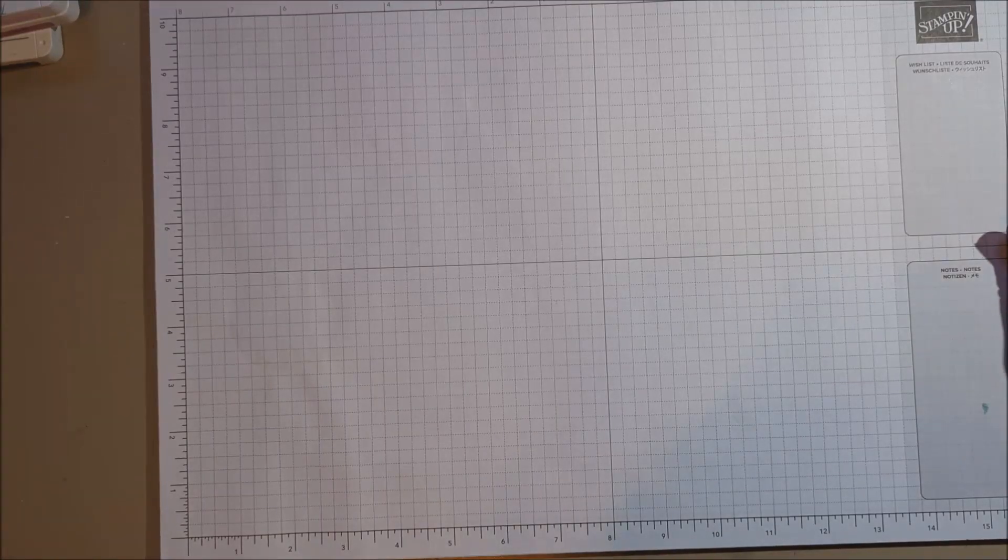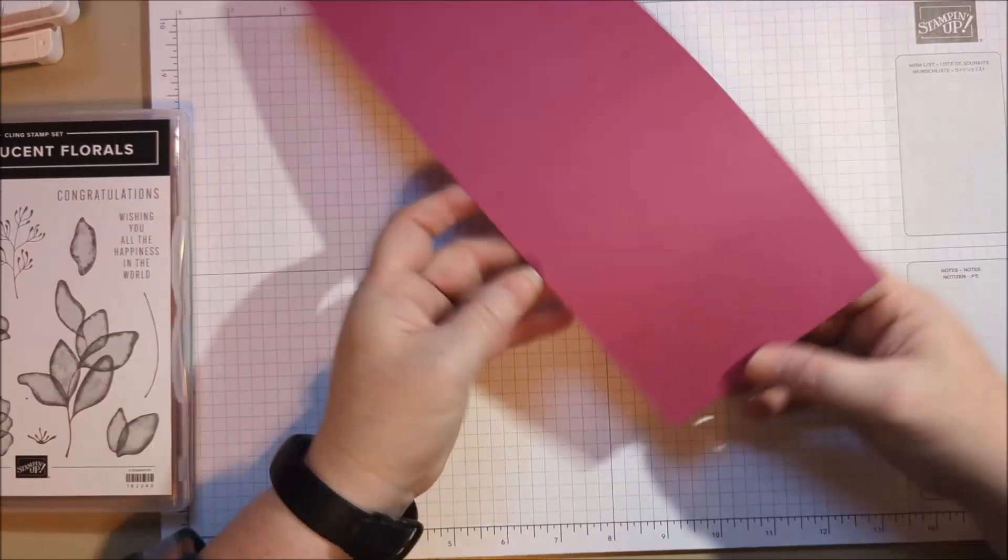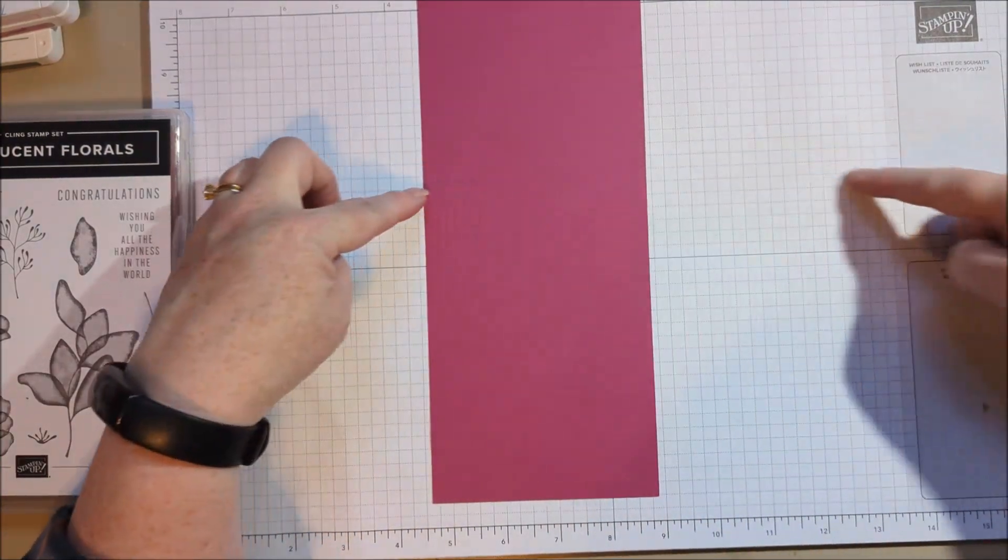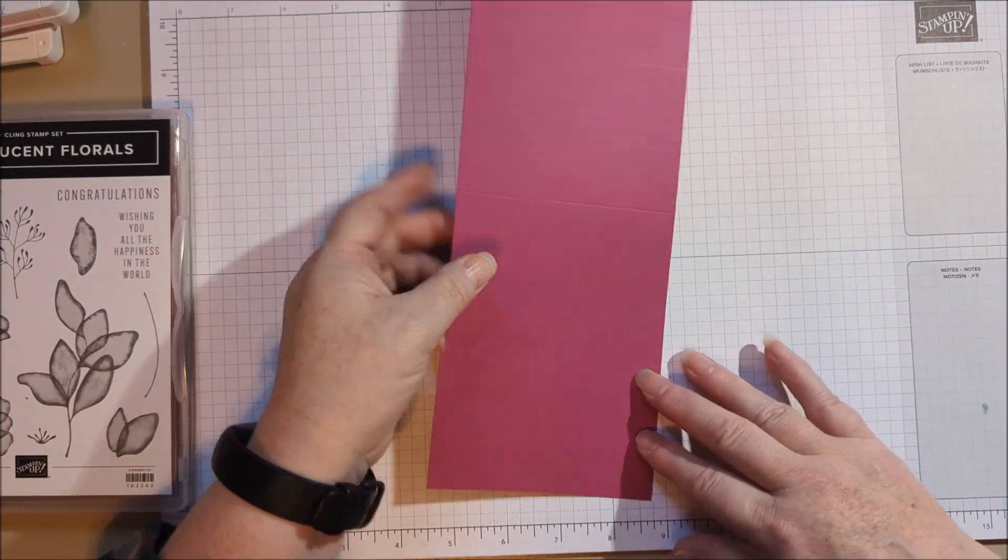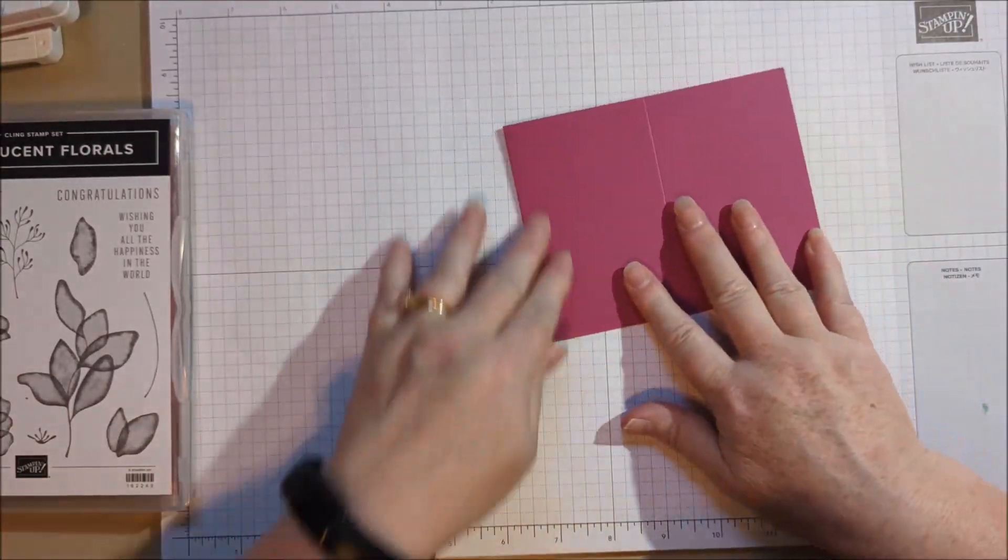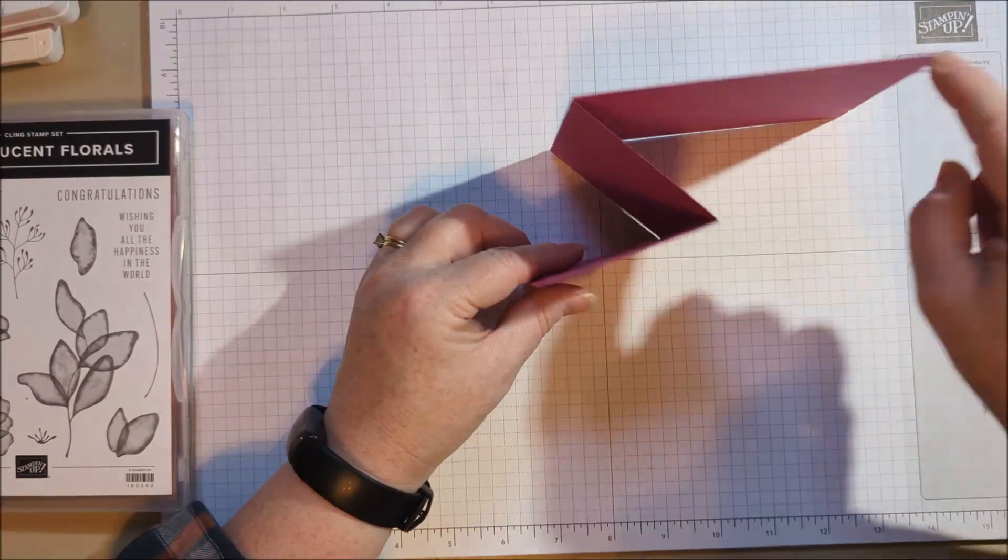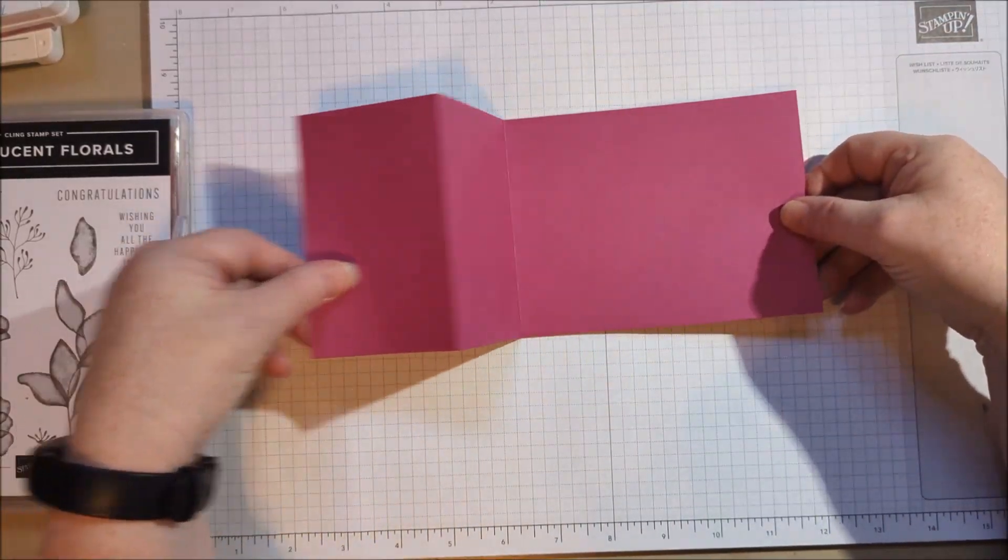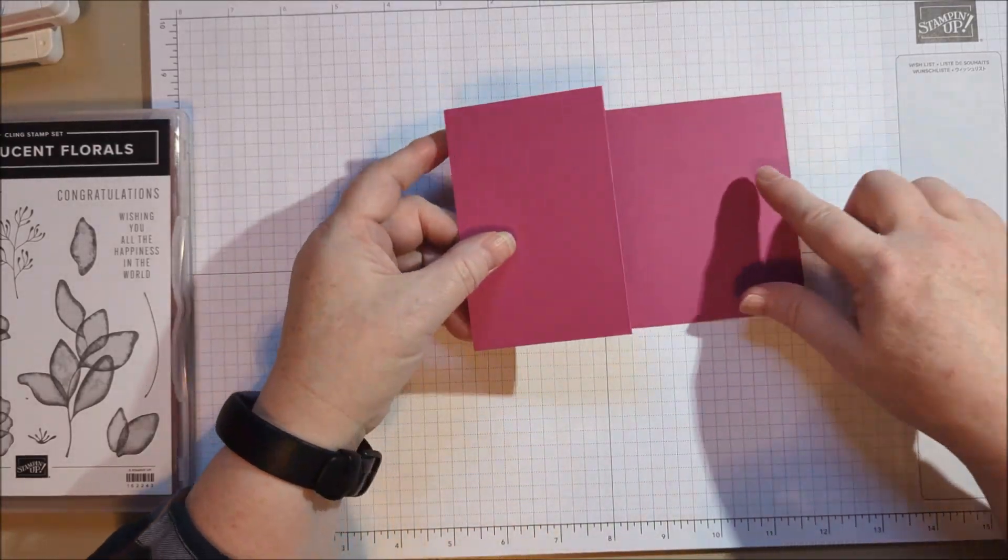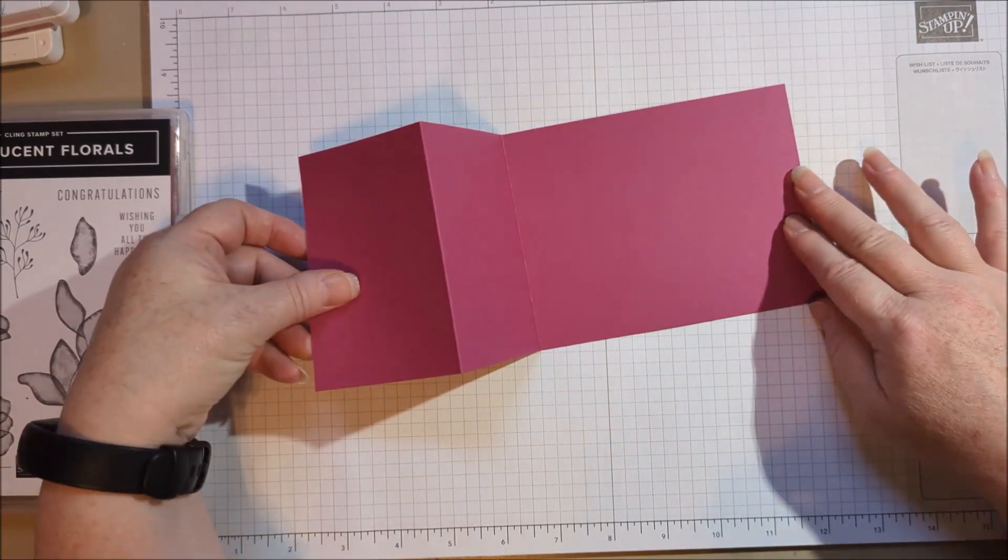So we're starting with a piece of berry burst cardstock. And I have cut it at the four and a quarter, cut the cardstock in half. Often I cut it this way, but this time I cut it long ways. And then I scored it at the five and a half. And then again, one of these little areas at two and three quarters. And that makes this Z pattern. So it opens like that.